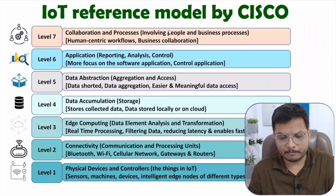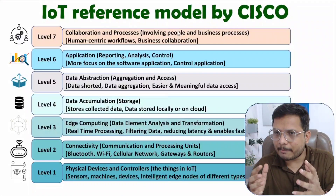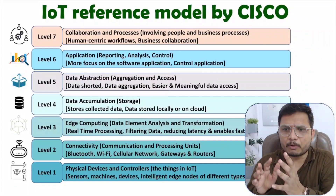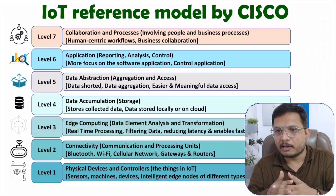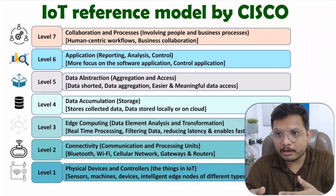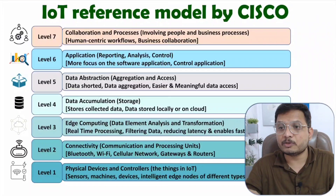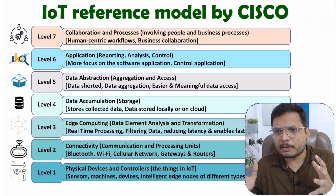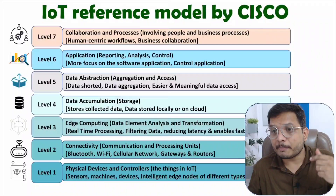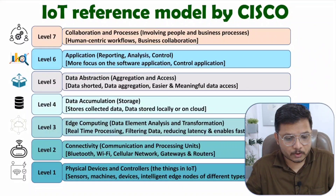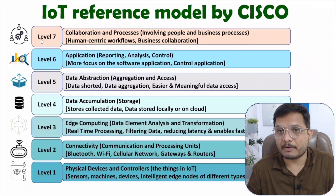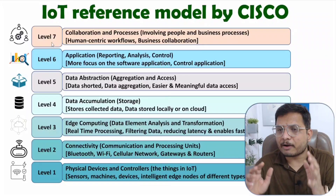At level seven we have collaboration and processes. People are involved here because ultimately people will be using the application, so involving people is essential to run a business properly. Collaborating with companies brings more people in, giving the application meaningful insights and access. Human-centric workflows and business collaboration come at level seven.